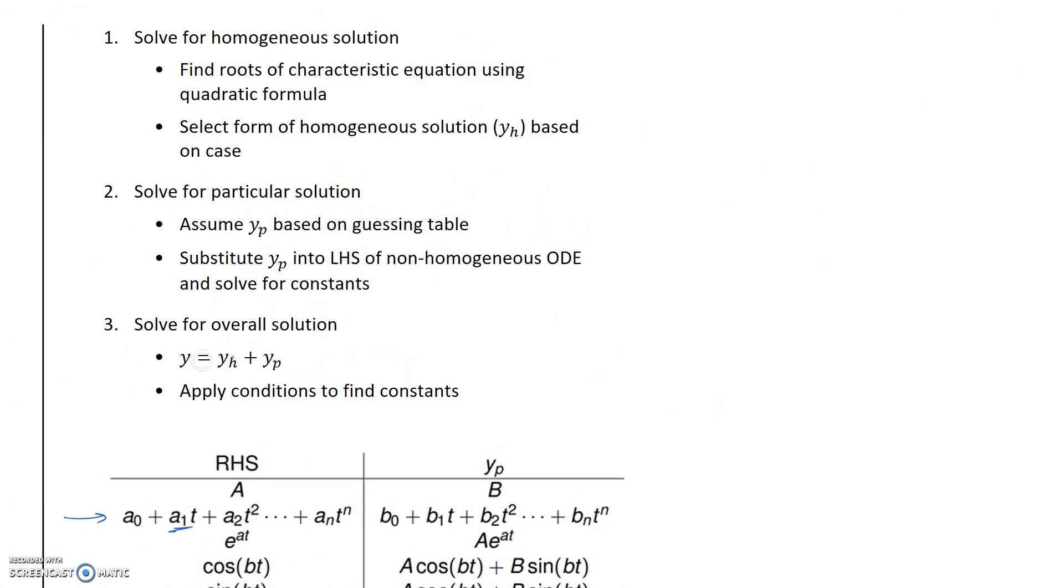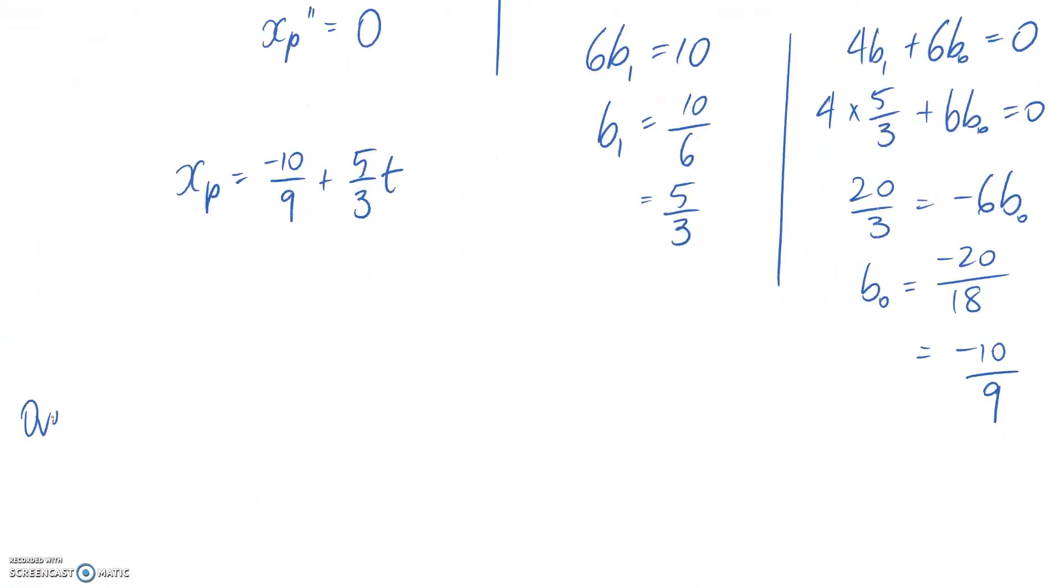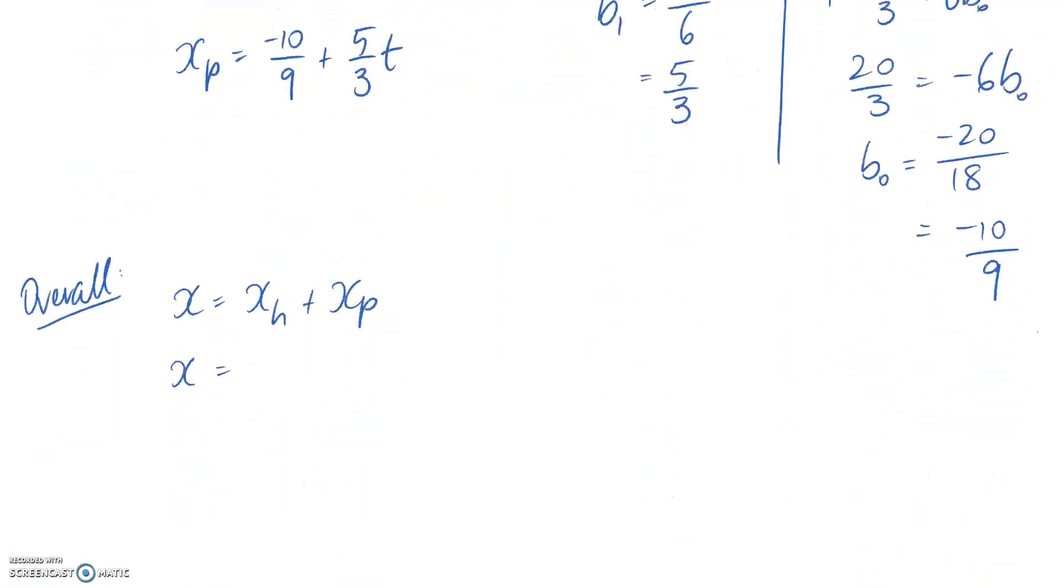The third step is to look for the overall solution, and that's where we add our homogeneous and particular solutions together, and then apply their conditions to find the constants. So, write in overall here. So adding together our two solutions, x equals. So h was equal to all of this stuff. So let's pop it in. And then the xp we just worked out to be this part.